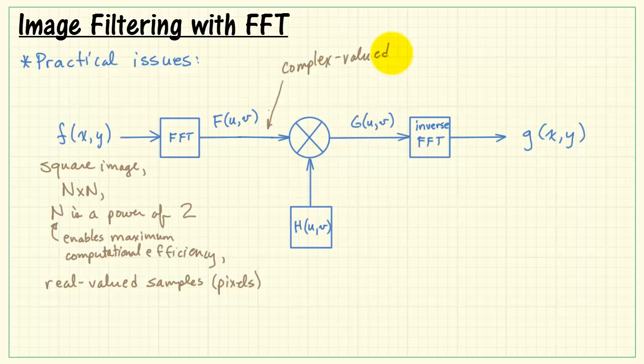When we pass that through the FFT to get the image spectrum, we end up with complex values. We need to then take the product of a filter that has complex values as well. The complex valued spectrum passing through the inverse FFT also yields complex values.